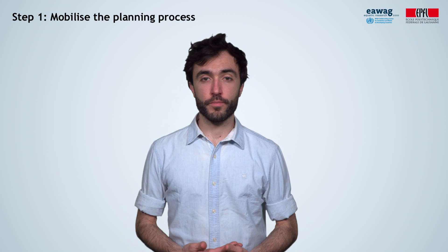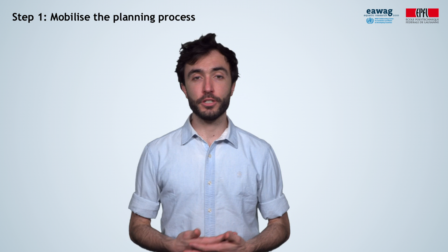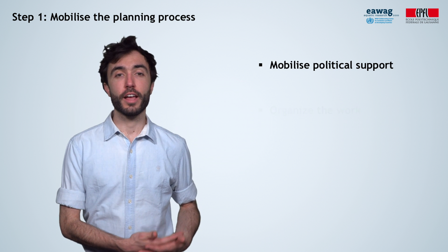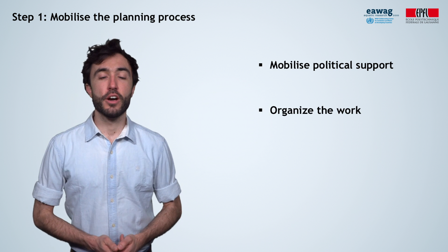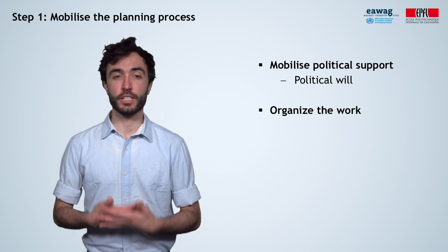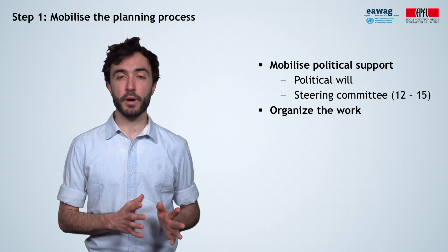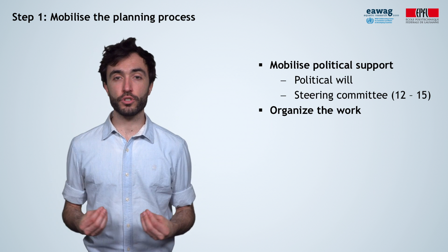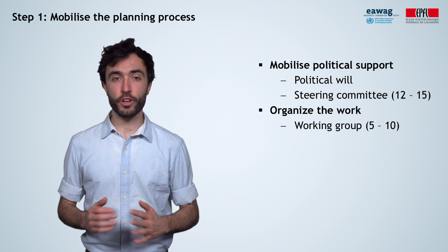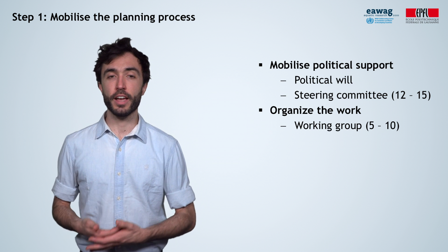Let's start with step one. How should you start preparing a strategic plan? There are two major activities required to ignite the planning process: mobilizing political support and organizing the work. For such a plan to materialize, you need political will and support on behalf of the political leaders and senior decision makers. The guide recommends establishing a steering committee of maximum 12 to 15 people to direct the process and provide the required political support. In parallel, you will need a working group of five to ten members to translate the requirements of the steering committee into practical measures.